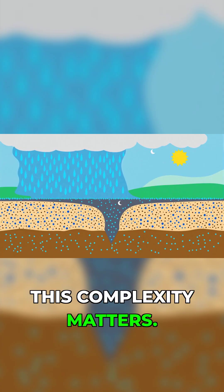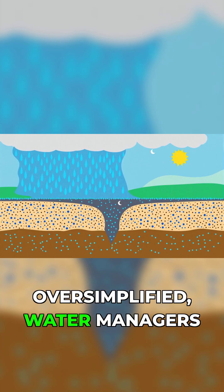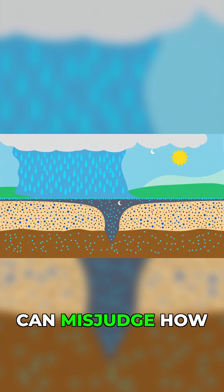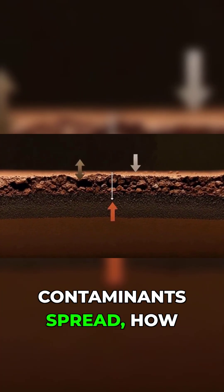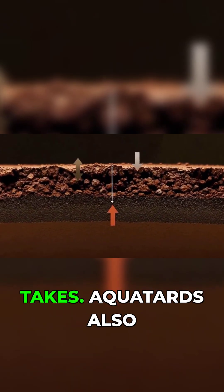This complexity matters. If aquitards are oversimplified, water managers can misjudge how pumping affects nearby wells, how fast contaminants spread, or how long recharge takes.